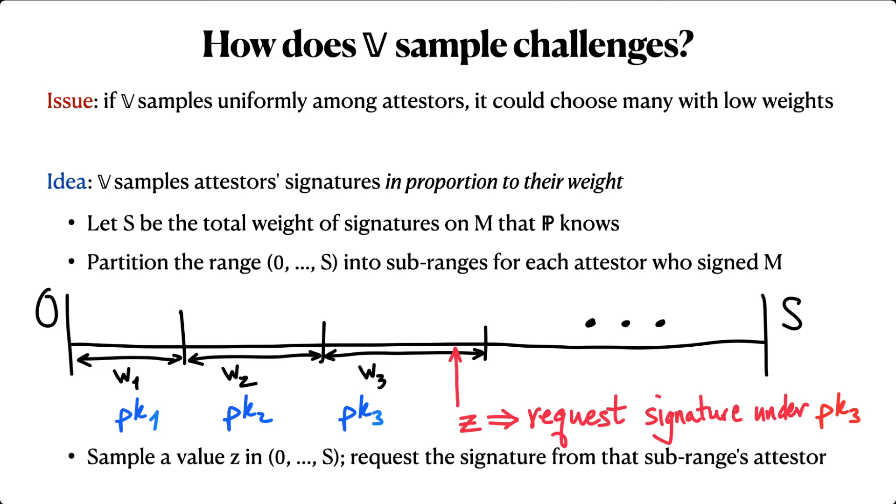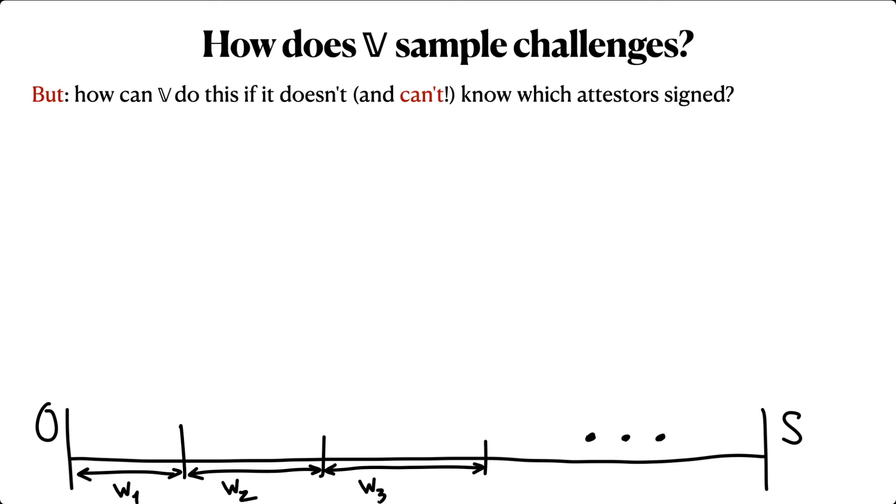For example, if the verifier chooses the value of Z I've drawn here, then it would request the signature from the attester whose public key is PK3. But there's an issue here. Remember, the verifier is only allowed to receive a tiny amount of information from the prover, certainly not enough to write down all of the sub-ranges of all of the attesters. So how can the verifier execute the sampling procedure that I've just described?